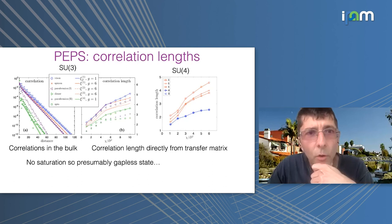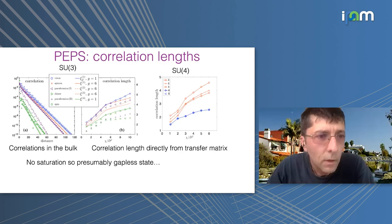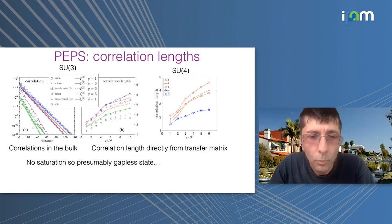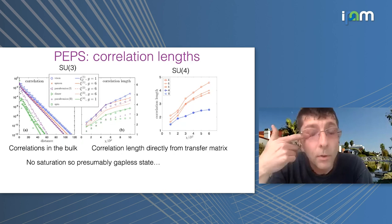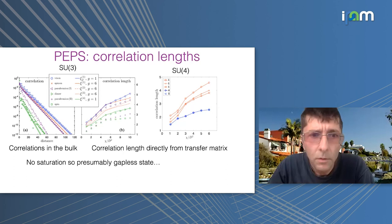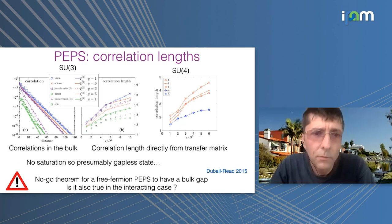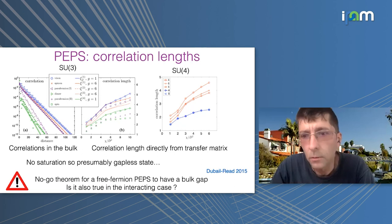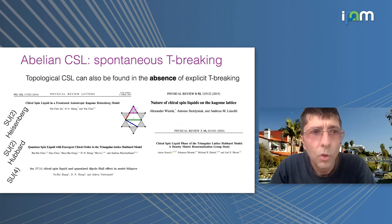With PEPS you can also compute correlation lengths: either from actual correlation functions — as in the left panel for SU(3) showing spinon-spinon and spinon correlations, then extracting the correlation length — or directly from the transfer matrix. The two approaches agree very well. But if you plot the correlation length versus chi (the CTMRG control parameter), you see it is not saturating, so presumably it is gapless, consistent with the no-go theorem for free fermions. It would be very interesting to extend the theorem to interacting PEPS: is it true that you cannot get a PEPS for a chiral state? Apparently this is what we always find.